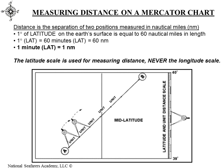Our distances on the Mercator chart are always measured on the latitude scale. One minute of latitude equals one nautical mile, and we can use our compass or dividers to walk those distances off to measure distances. We're only going to use the latitude scale — never the longitude scale.